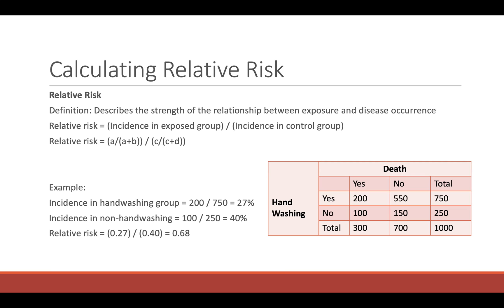In cohort studies, we use relative risk, so you'll have a bit more experience with relative risk — a lot of this is going to be a review. As a reminder, relative risk describes the strength of the relationship between exposure and disease occurrence. Here's the equation for the relative risk.